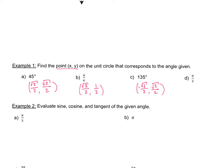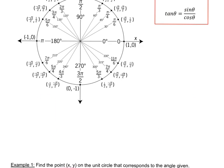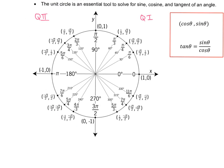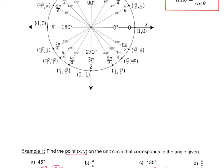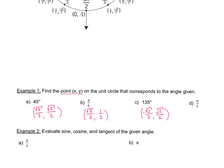Next is pi over 2, which is 90 degrees. The coordinate is going to be (0, 1). This makes sense because the x value is 0 since it's sitting on the y-axis.